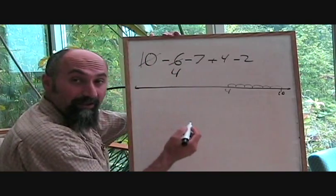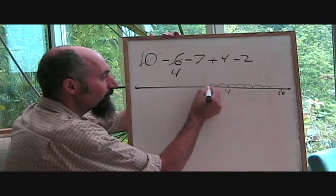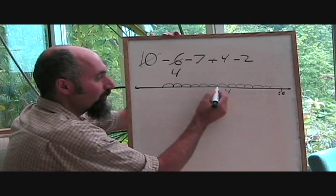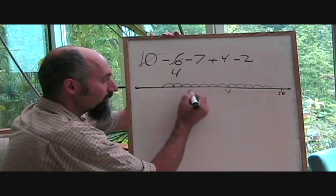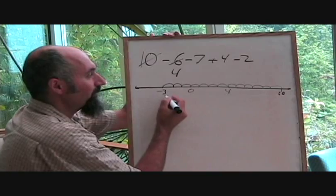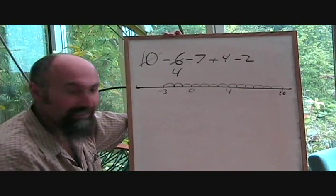And then you're going to go back another 7. So you're going to go 1, 2, 3, 4, 5, 6, 7. So if you go 1, 2, 3, 4, 3, 2, 1, 0. So you're at negative 3 here. So 4 minus 7 is negative 3.